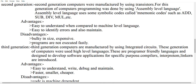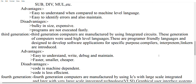In the third generation, computers are manufactured using integrated circuits. The programming language used is high level language, which is readable and can be written like English language. These are programmer-friendly languages designed to develop software applications for specific purposes. Compilers, interpreters, and linkers were introduced in this generation. High level languages are considered procedure-oriented languages.